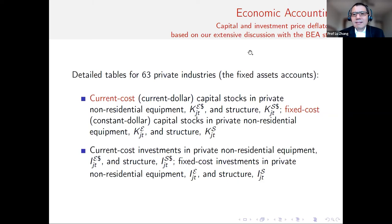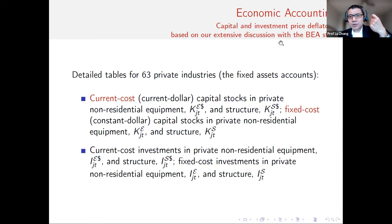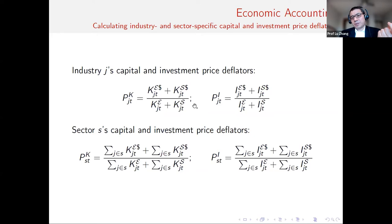Regarding capital and investment price deflators, this is based on our extensive conversation with BEA staff. We work with the detailed tables for current cost and fixed cost capital and investment. Some prior studies — Chirinko and Shaler, for example — use chain-type dollars, which are not strictly additive; you cannot add them up in a capital accumulation equation. With fixed cost and current cost, you can do so, and we construct the price deflators that way. For economic depreciation, we work with the detailed BEA tables. In our current cost accumulation equation — the perpetual inventory recursion — the depreciation rate is the quantity depreciation rate, so we work with fixed costs. You cannot use current costs for that — otherwise it's a mistake.